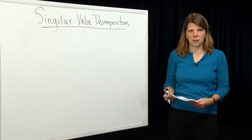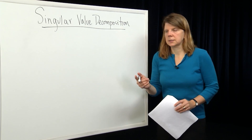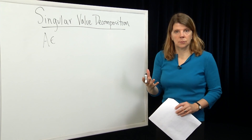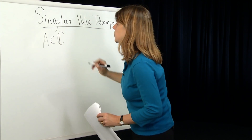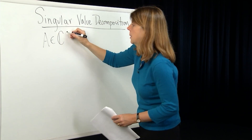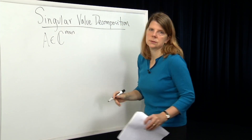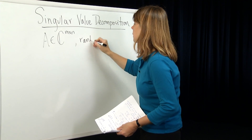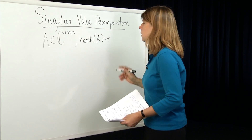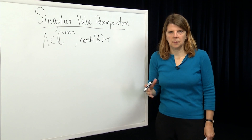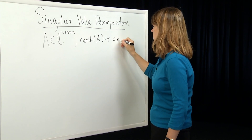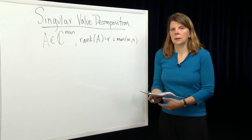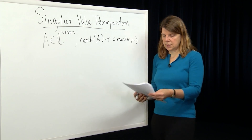This is just a presentation of that decomposition. If you have a matrix A, in general A has elements in the field which is either the real numbers or the complex numbers. So let's assume that A is an m by n dimensional matrix with complex elements, and that the rank of A is equal to r, where r is less than or equal to the minimum of m and n.